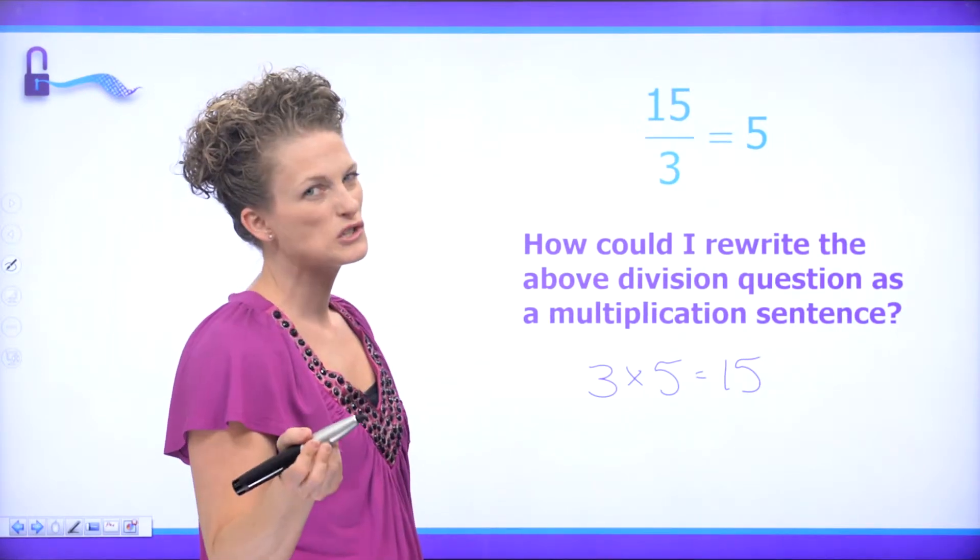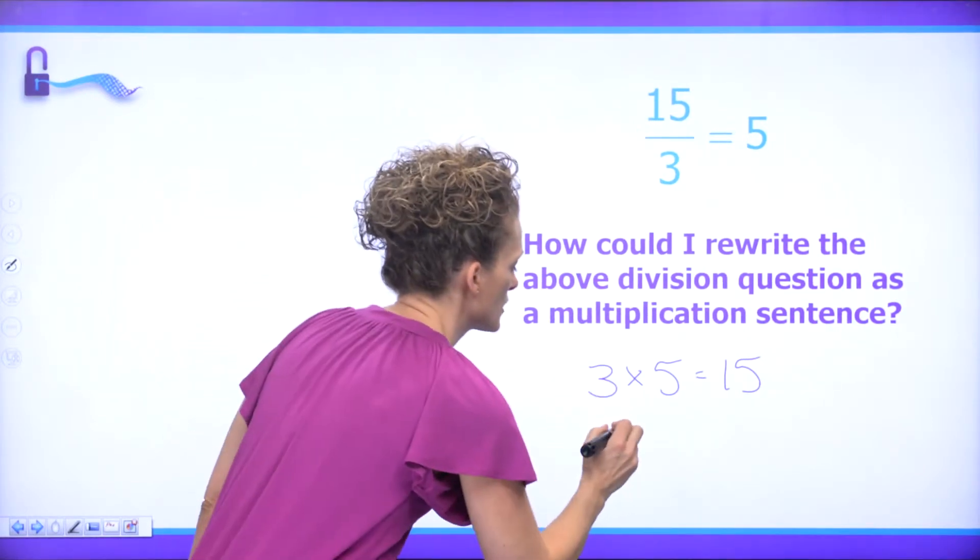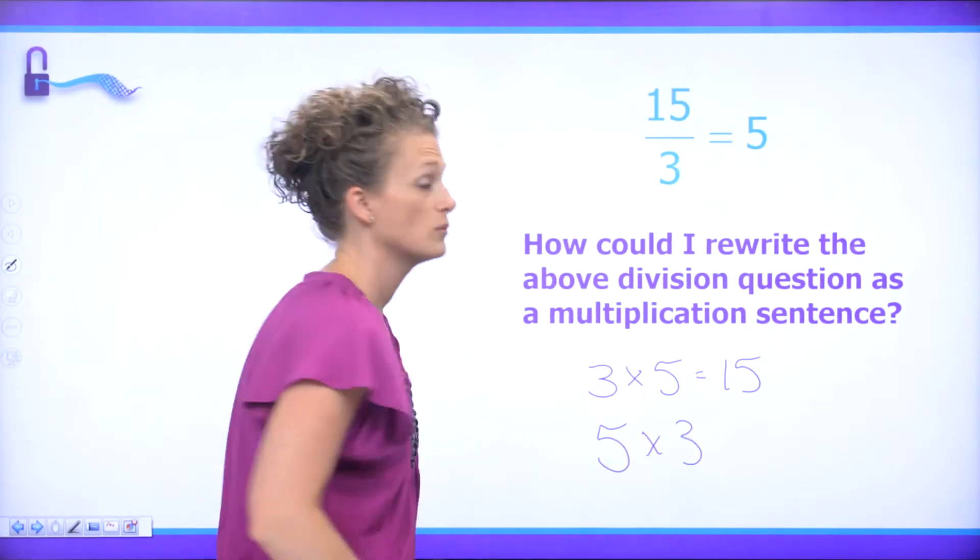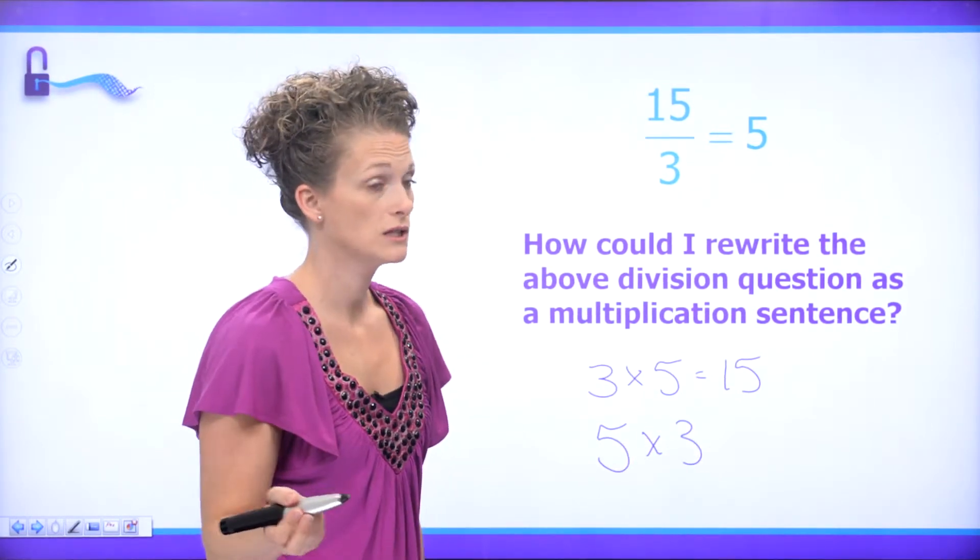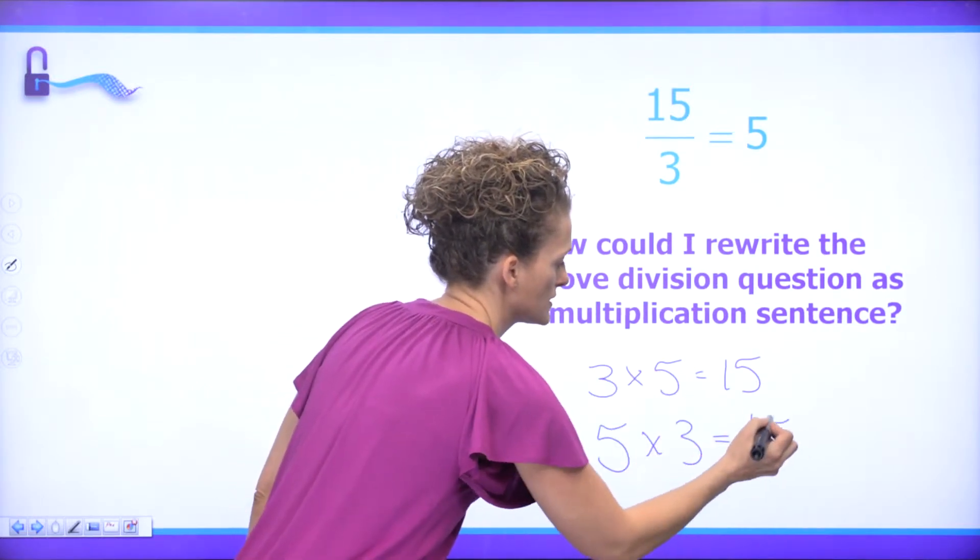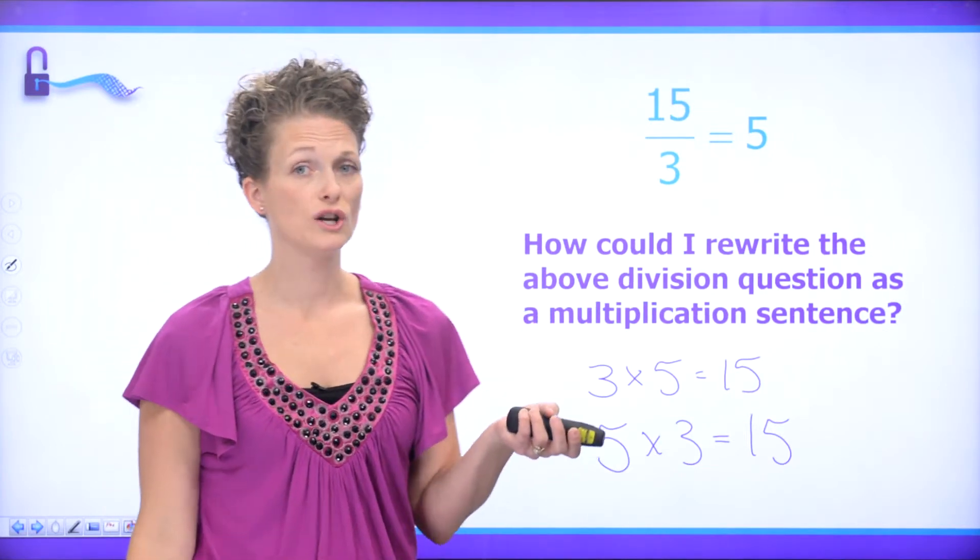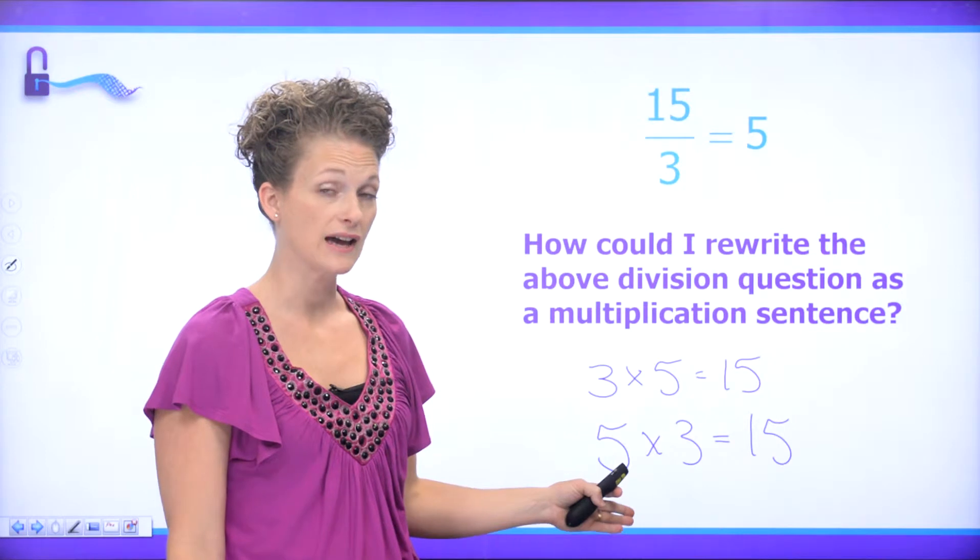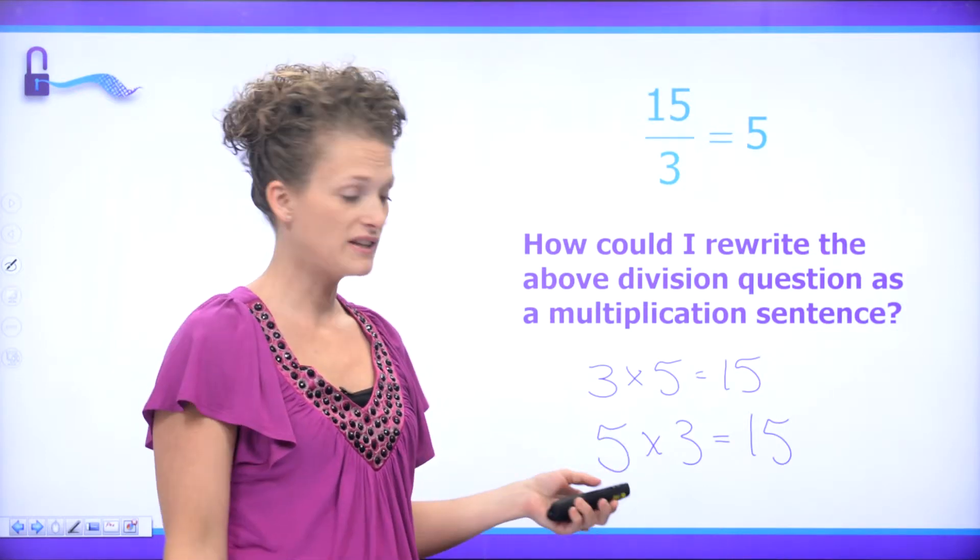Well maybe there's two ways because I really could start with the 5 and multiply it by 3, and we know that 5 times 3 is 15 just the same as 3 times 5 is 15. So we can start with the 3 or we can start with the 5, but these are fact families because they're all related.